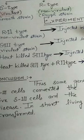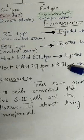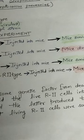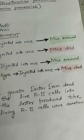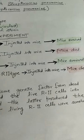But when he took the mixture of heat-killed S3 type bacteria and R2 type bacteria and injected it into mice, the mice developed pneumonia and died. This was very surprising.